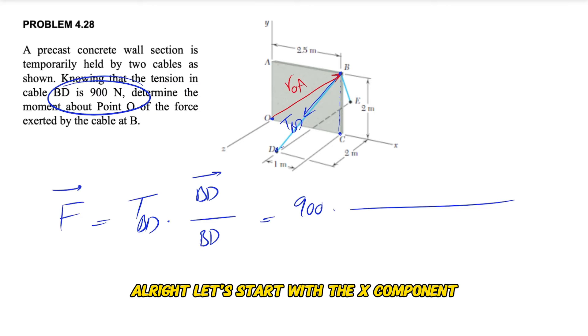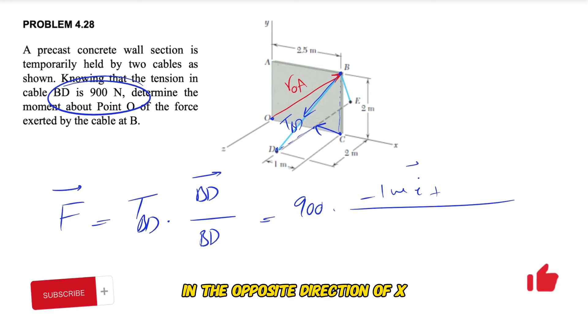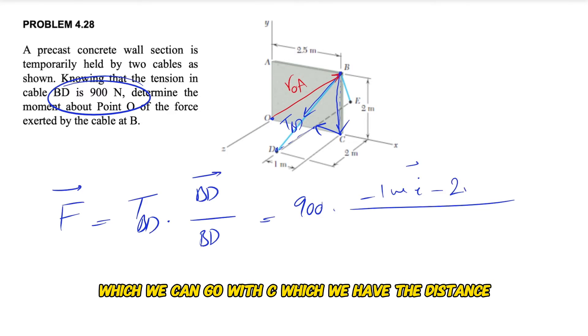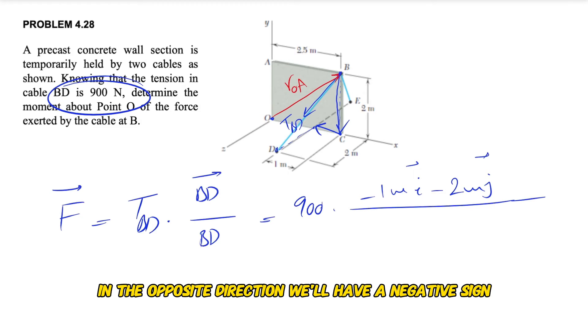Let's start with the X component. If we look at X, we are moving from here to here, which is in the opposite direction of X, so it will be minus 1 meter. For the Y component, since point D is on the XZ plane, we are moving from B to any point on the XZ plane in the opposite direction, so minus 2 meters for the Y component.